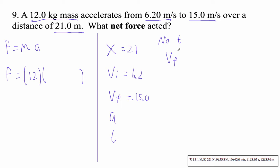So VF squared is VI squared plus 2AX. So 15 squared equals 6.2 squared plus 2 times A times 21.